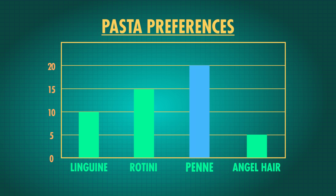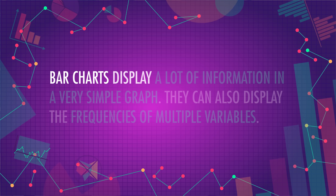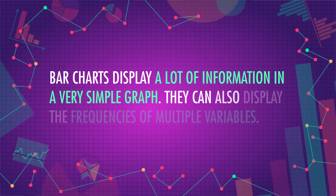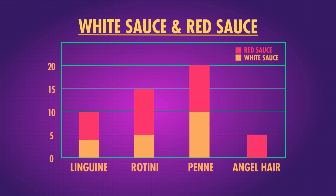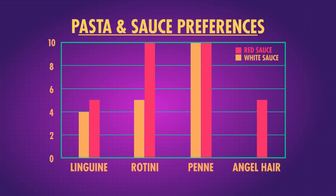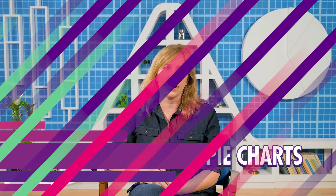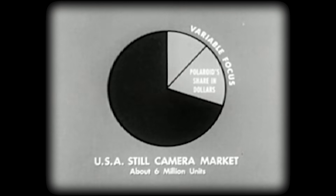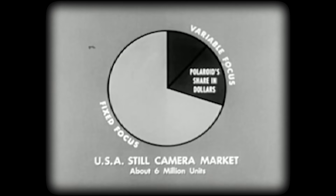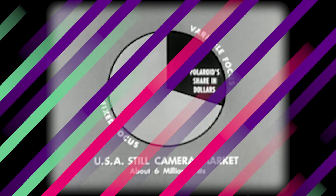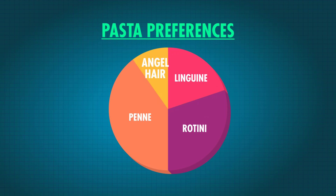You can see that penne is by far the most chosen pasta, and how it compares to angel hair. Bar charts display a lot of information in a very simple graph. They can also display the frequencies of multiple variables. Let's say we want to compare each of these pasta types with either red or white sauce. We can either stack frequencies, so it gives us the same information as our contingency table, or we can have bar charts side by side. Pie charts are another way of displaying categorical data. They use the relative frequency of categories to portion out pieces of a circle, just like a pie. The higher the relative frequency, the bigger the slice of pie a category gets. Pie charts are useful because our eyes are pretty good at comparing slices. Our pasta data in a pie chart looks like this. Pie charts are great at visually displaying one variable, but they struggle to effectively display more than one variable, like our pasta and sauces contingency table.